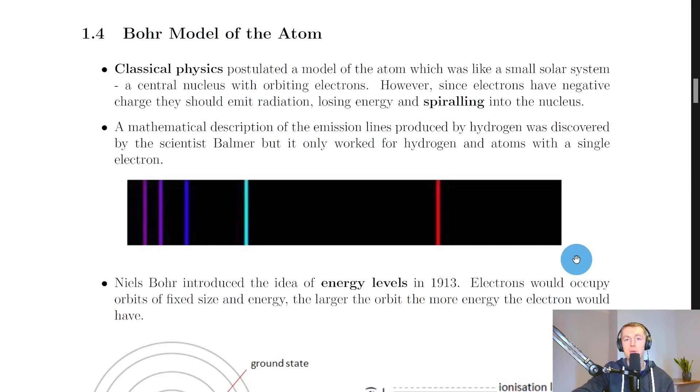Now the Bohr model of the atom was something that was seen in higher physics, but we'll also look at it in a bit more detail in advanced higher physics. Firstly it says that classical physics postulated a model of the atom which was like a small solar system, i.e. a central nucleus with orbiting electrons. And this is Rutherford's model of the atom and I'll just show you a quick simulation to show you how this looks.